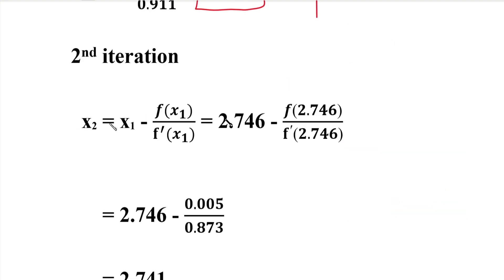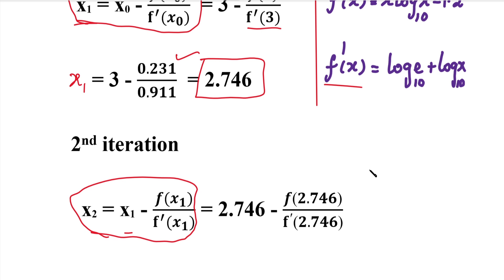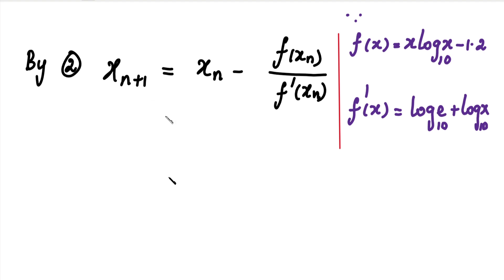In the second iteration, we substitute x1. In the previous iteration, we substitute x1 and simplify. We compare the answer to the previous iteration; if they match to the required decimal places, we stop. We will use the shortcut method and store the formula in the calculator: xn+1 = xn - f(xn)/f'(xn).